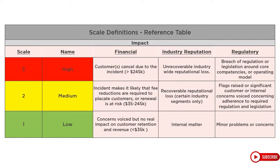We dig a little deeper here on the impact side. Now we are looking at where the risk scenario may impact one or more categories. The highest rated group then becomes the rated risk impact for the scenario. If the risk we are grading would have very little regulatory or reputational impact, but would cost us $250,000 to recover from, we will rate the impact high.